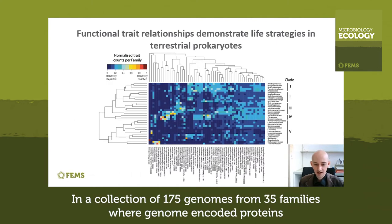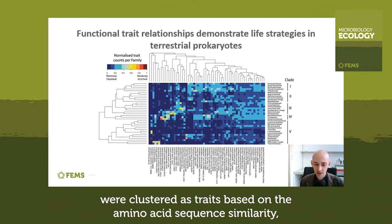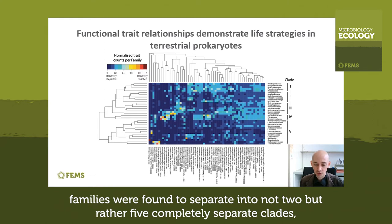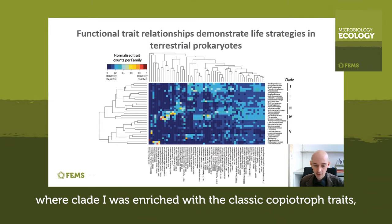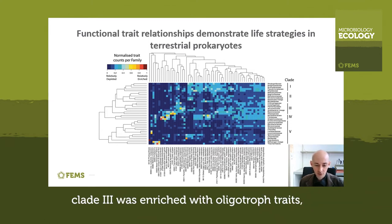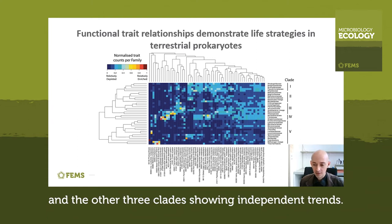In a collection of 175 genomes from 35 families, where genome-encoded proteins were clustered as traits based on their amino acid sequence similarity, families were found to separate into not two but rather five completely separate clades, where clade one was enriched with the classic copiotroph traits, clade three was enriched with oligotroph traits, and the other three clades showing independent trends.